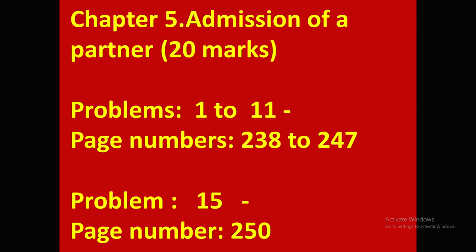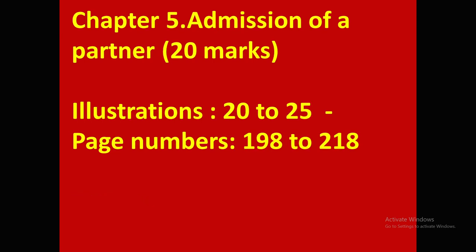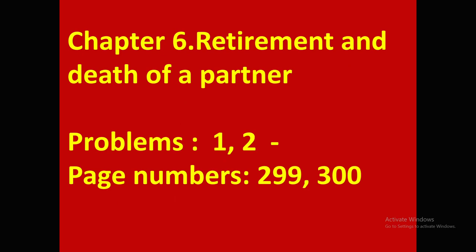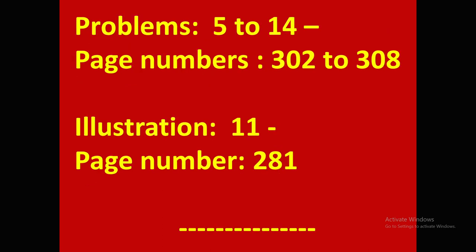Next, Chapter 5 — Admission of a Partner, 20-mark problems: Problems 1 to 11 (pages 238 to 247), Problem 15 (page 250). Illustrations to learn: Illustrations 20 to 25 (pages 198 to 218). For 2-mark problems from Chapter 5: Problems 7 to 10 (page 236). For 20 marks, rarely Chapter 6 — Retirement and Death of a Partner may be asked: Problems 1 and 2 (pages 299–300), Problems 5 to 14 (pages 302 to 308), Illustration 11 (page 281).